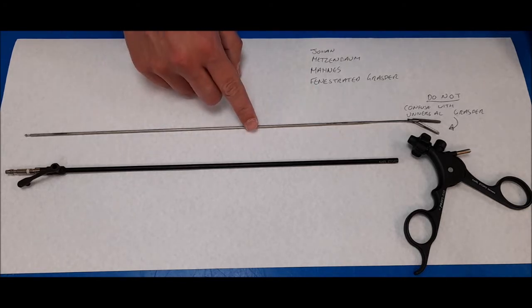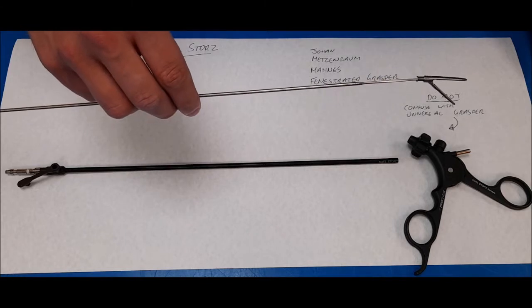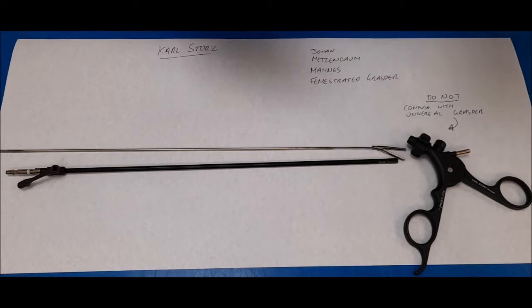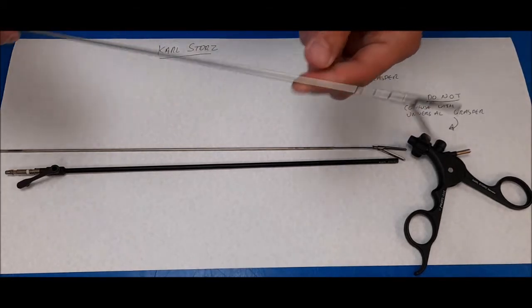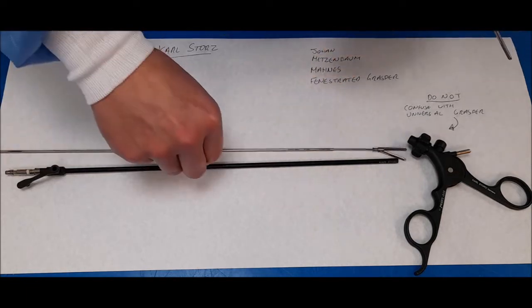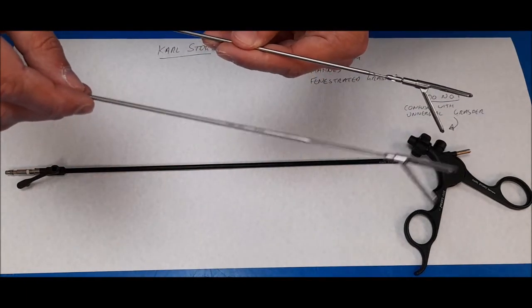In this particular scenario, we are using the Johan faucet. Please ensure that it is not to be mixed up with the Scallop Universal Grasper. There are different sizes, different models, and they cannot be interchanged.